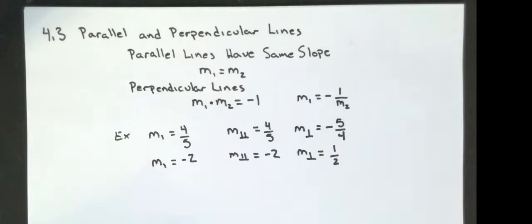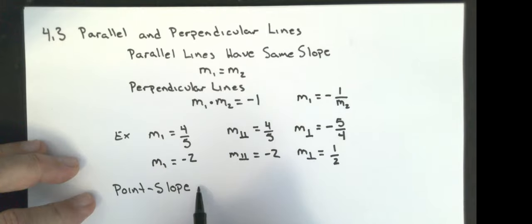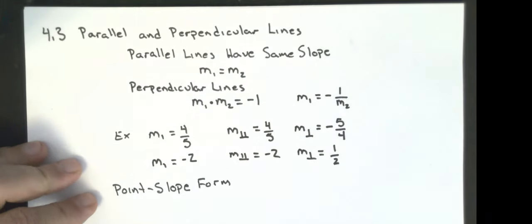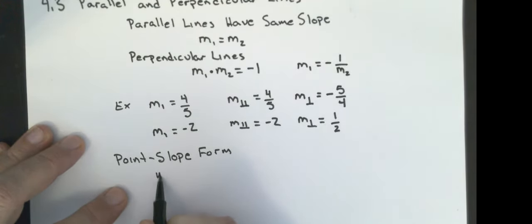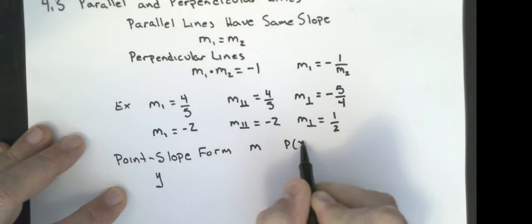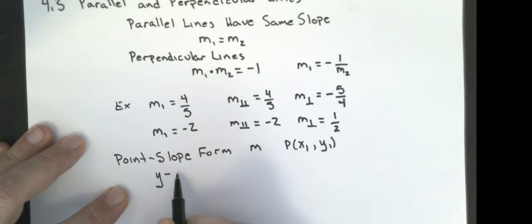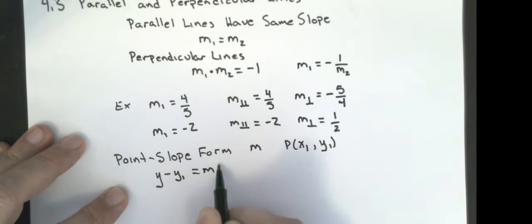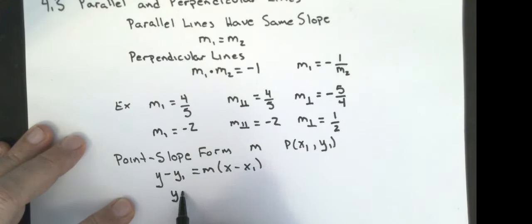They're also going to give you some point that the line goes through. From one of our previous lessons, we are going to be using the point-slope form to write our initial equation, and sometimes they're going to have us put it into slope-intercept form. The point-slope form is y minus y1 equals the slope times x minus x1, where (x1, y1) are the coordinates. Just fill in the blanks.